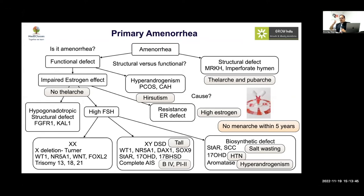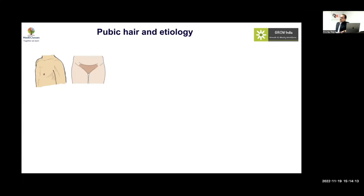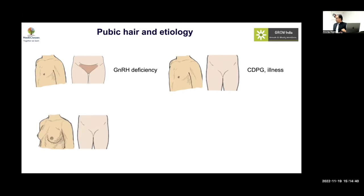If all components of pubertal development are present with amenorrhea, suspect a structural defect — rarely an acquired cause like a brain tumor or hyperprolactinemia. Pubic hair present but no breast development indicates GnRH deficiency — no estrogen production but adrenals working normally. No breast and no pubic hair could be constitutional delay of puberty and growth, a systemic illness, or multiple pituitary hormone deficiency.